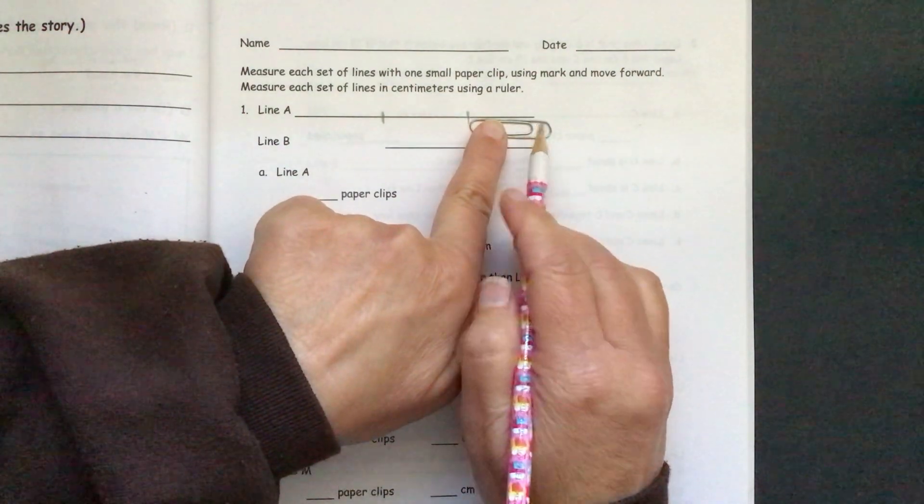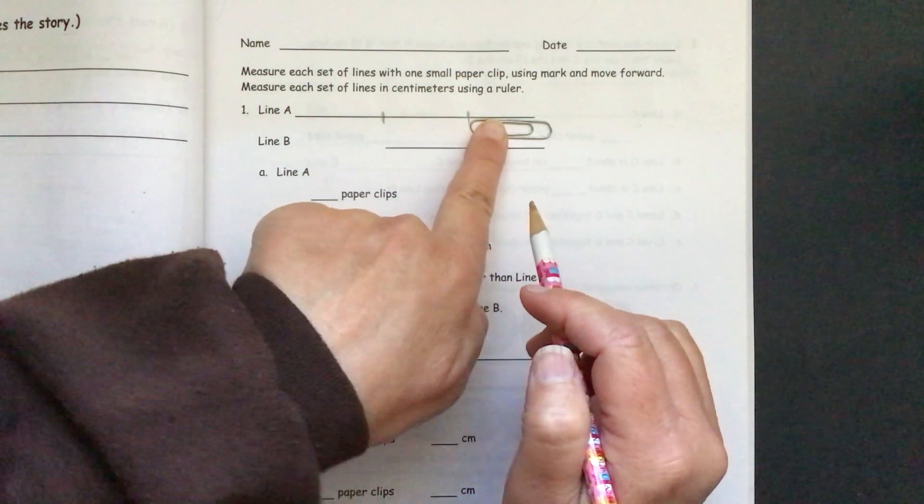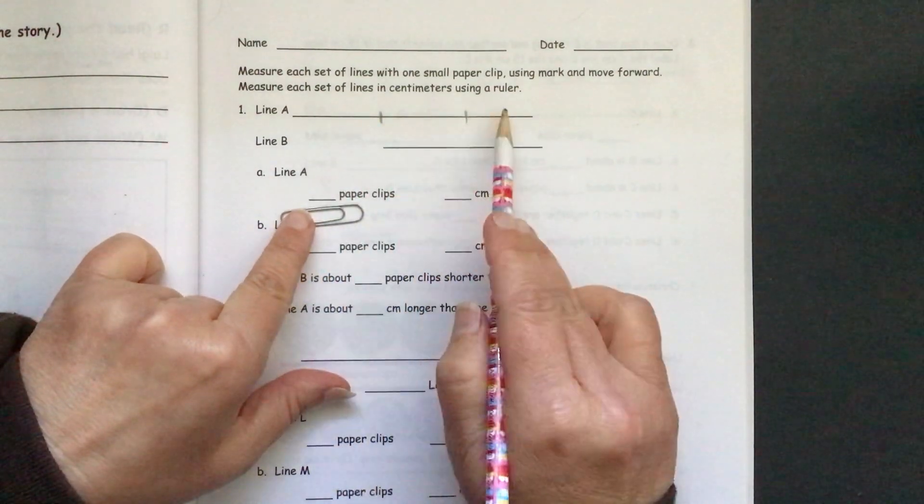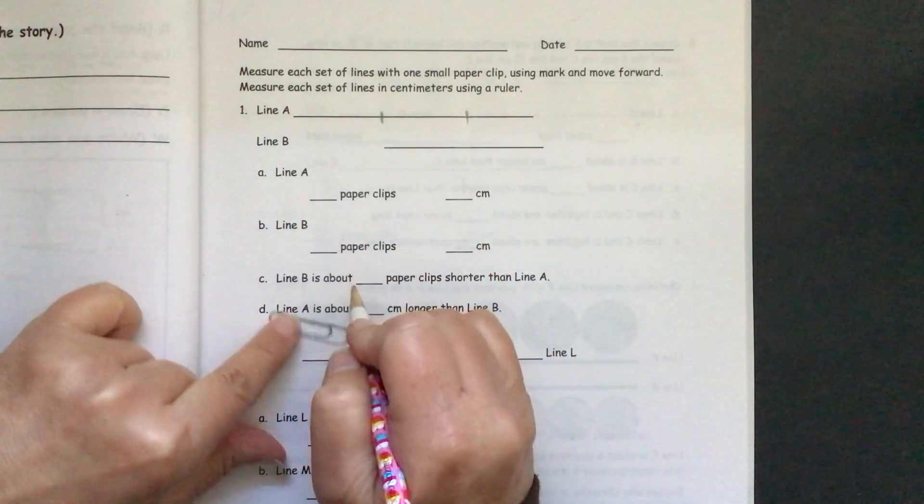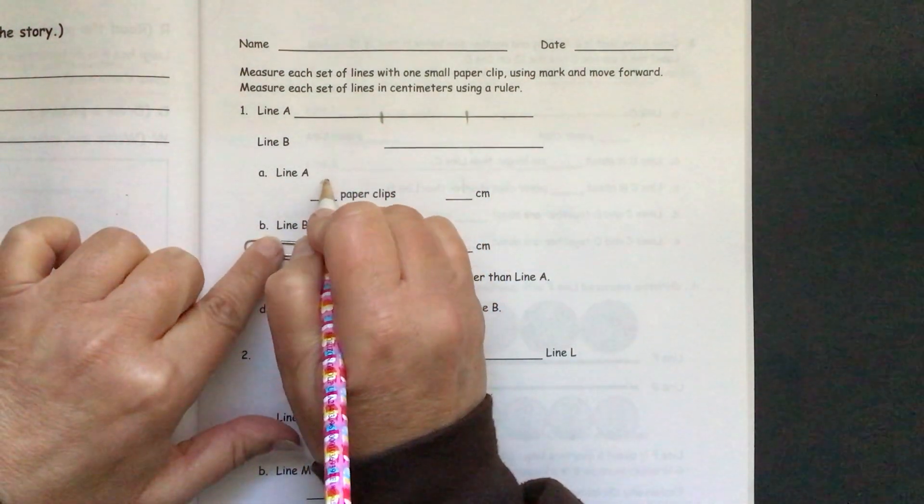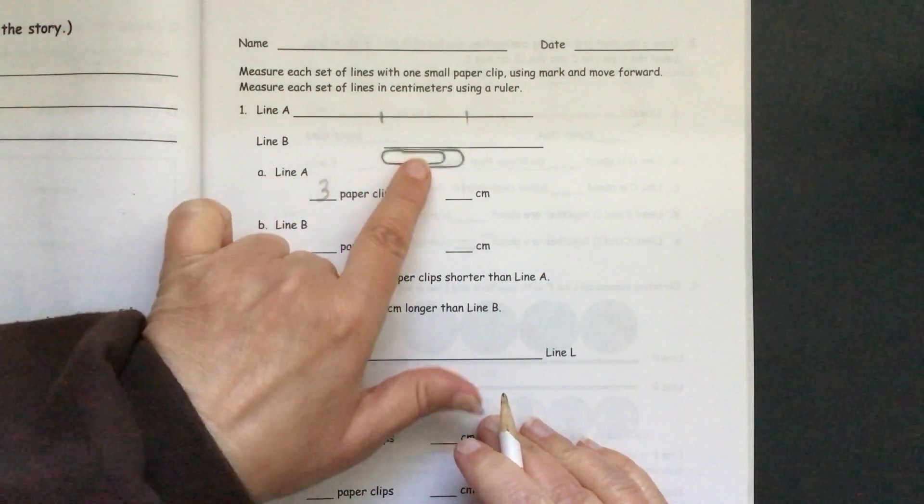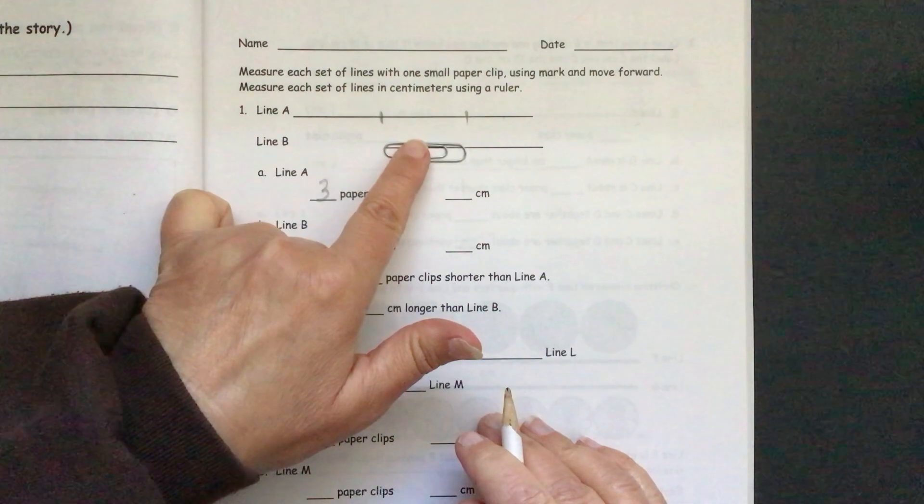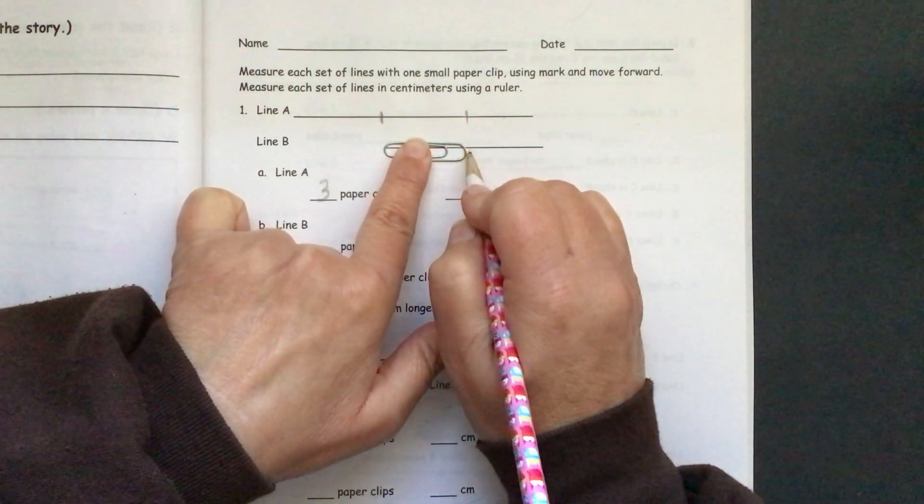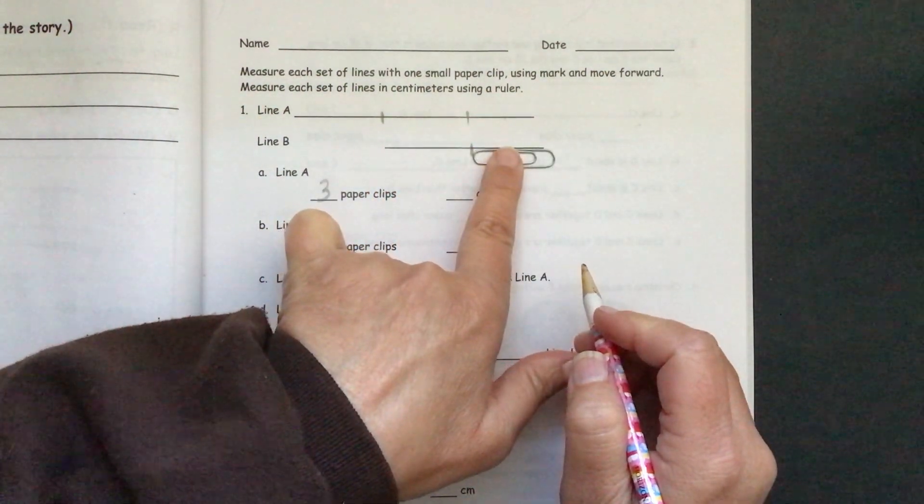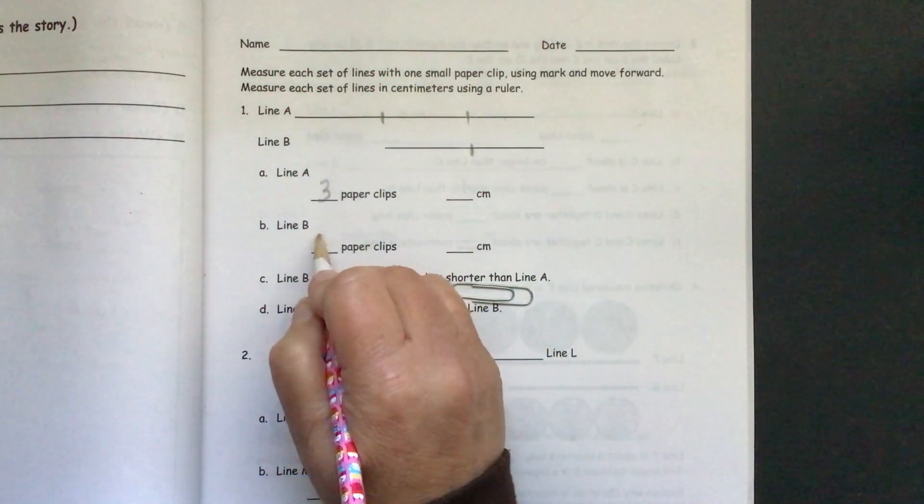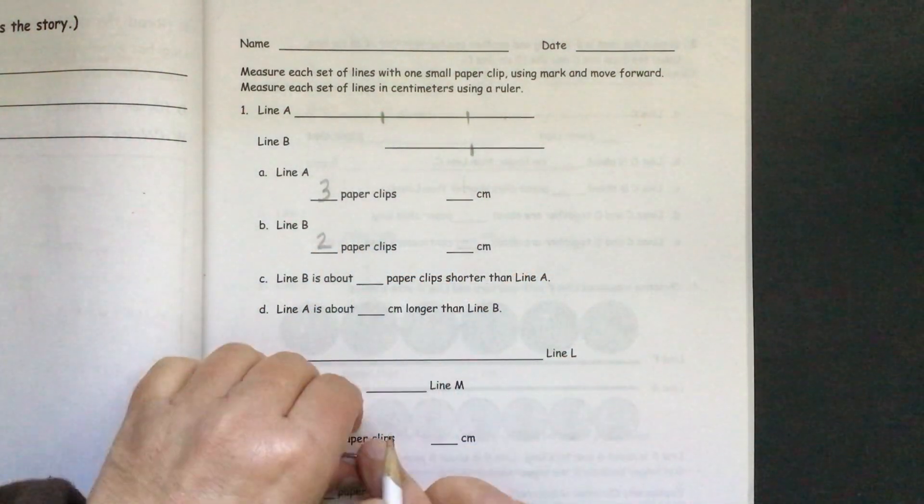And it's mostly another paper clip. So we have one, two, three, about three paper clips long for line A. And then for line B, we have measure. It's about two. Line B is about two paper clips long.